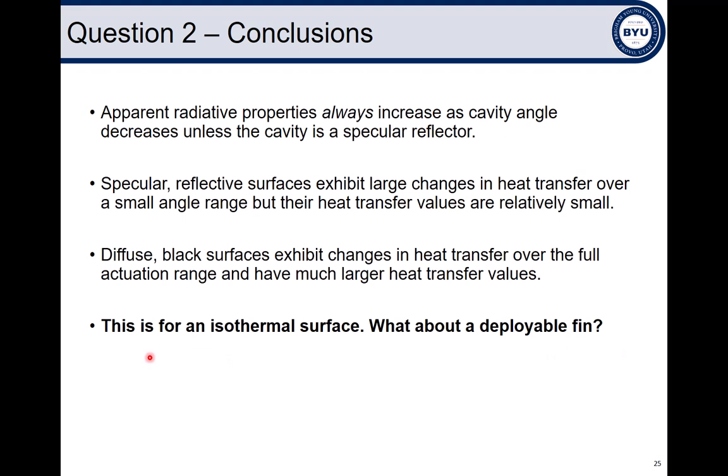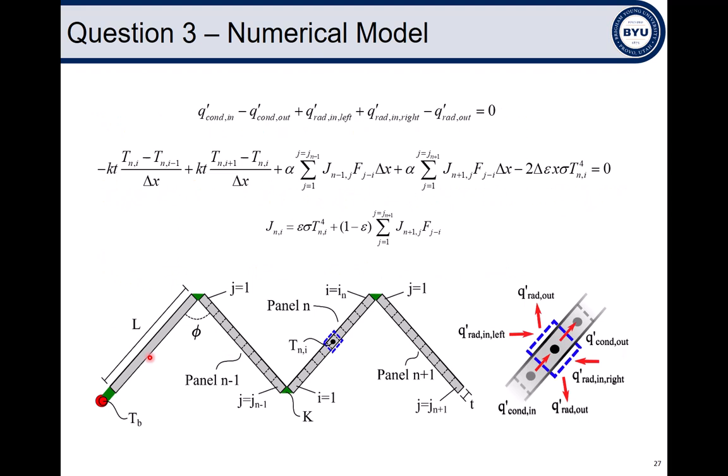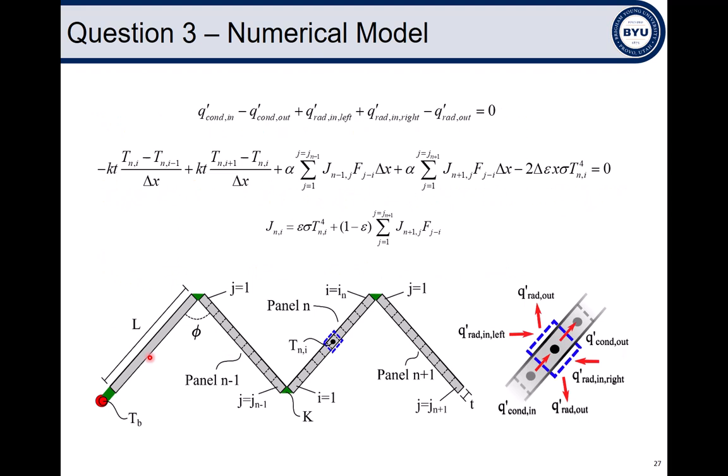How does the heat transfer change with actuation for a deployable surface? To answer this question, I generated a numerical model. This image depicts several rigid aluminum panels that have been linked by a flexible and thermally conductive hinge. This first panel is connected to an isothermal base, and the base is treated as a point. Heat conducts along each panel and is emitted via thermal radiation, and this radiation either exits the structure or intersects with other panels, where it's then either reflected or absorbed. I subdivided this structure into a finite number of control volumes and performed an energy balance on an example control volume, as shown here in blue, and depicted mathematically at the very top.